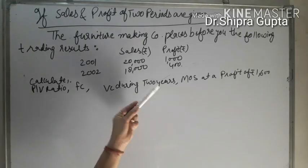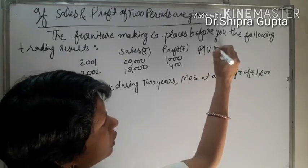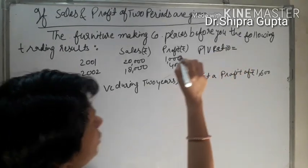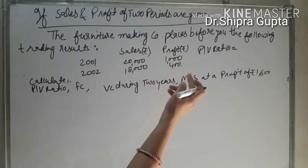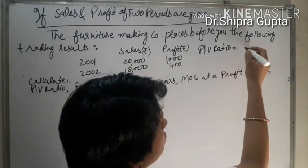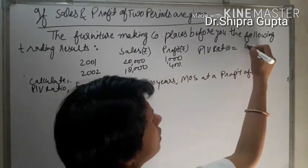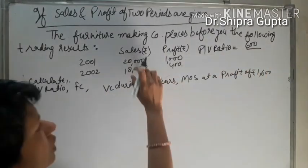First, we will calculate profit volume ratio. Two periods' sales and profit are given, so we calculate by the formula: change in profit upon change in sales multiply 100. Change in profit is 600 upon change in sales 2,000 multiply 100, so PV ratio equals 30%.